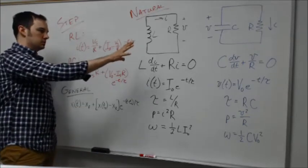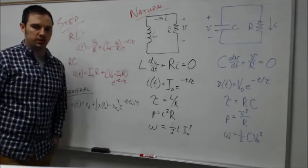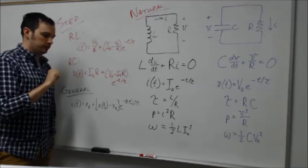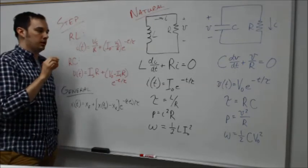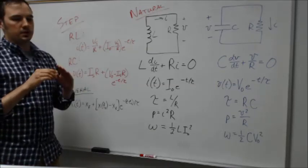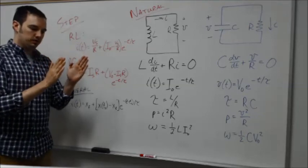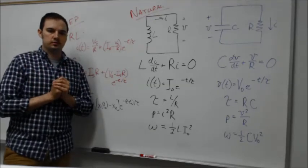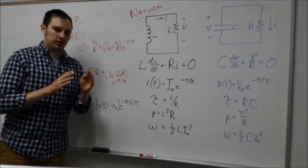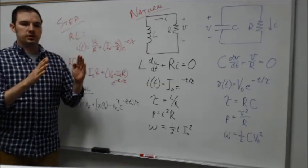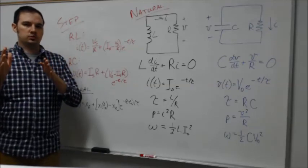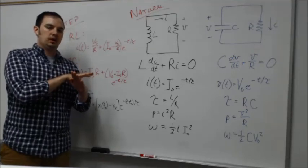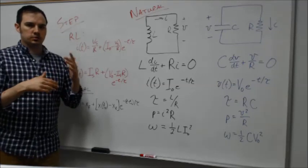The final topic we touched on was sequential switching. This would come into play if you have maybe multiple switches in an RL or RC circuit. In that case, the only thing you need to think about doing differently is simply evaluating the response at each given time range that's appropriate in between your different switching times. If I open one switch, I need to evaluate the circuit with that switch open before opening the second switch. When I open that second switch, my initial condition is going to be determined by whatever's happened after I opened that first switch.